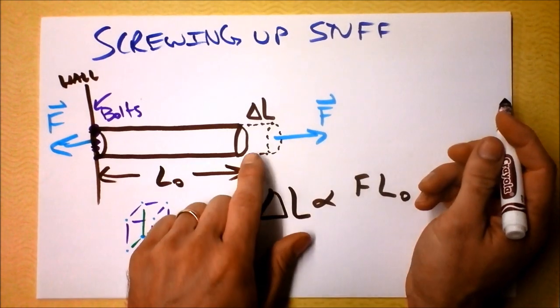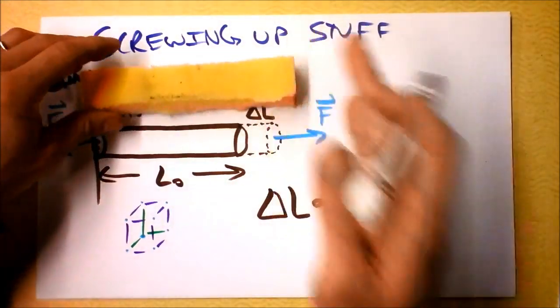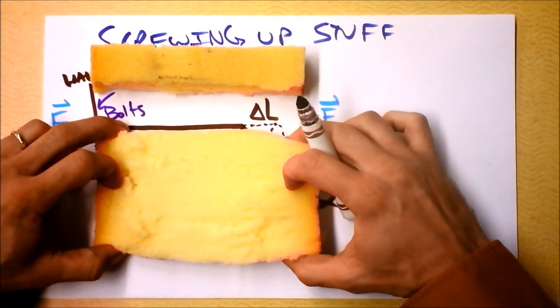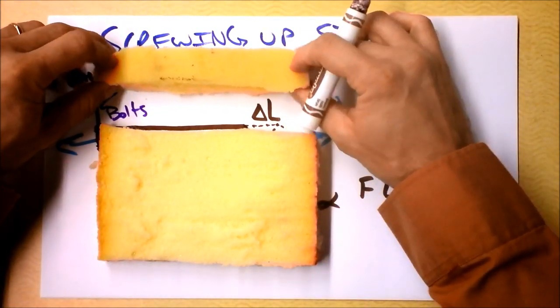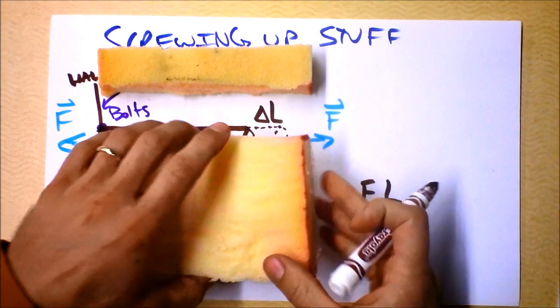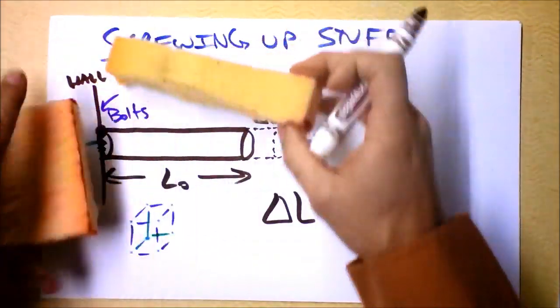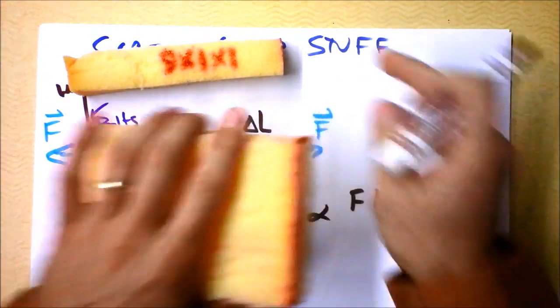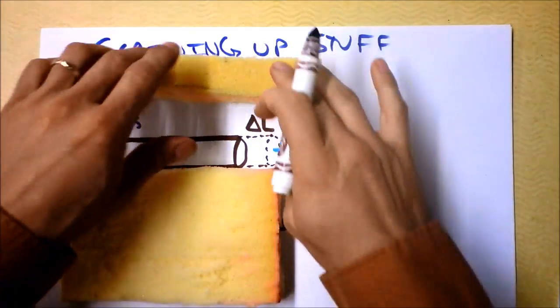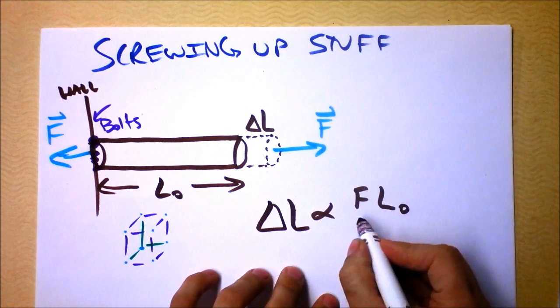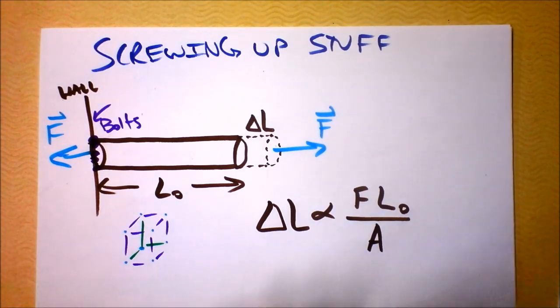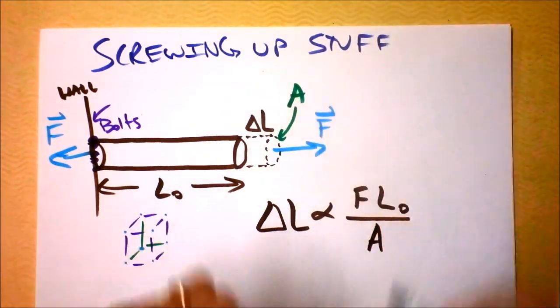What about the cross-sectional area? Do you think that this will stretch just as easily as this will stretch? This one has much more cross-sectional area, that would be this area right here, than this one does. Tiny area, big area. It makes sense that the one with the bigger area stretches less and the one with the smaller area stretches more. So it's inversely proportional to the cross-sectional area of the thing.